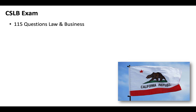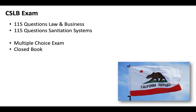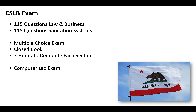So basically, you have to pass two tests: 115 questions of law and business and 115 questions covering sanitation systems. It's going to be multiple choice, closed book. You'll get three hours to complete each section. It's going to be a computerized exam that you will need to take at a CSLB testing facility. So if you're applying from out of state, just know that you need to come to California to take the exam.